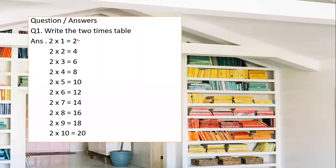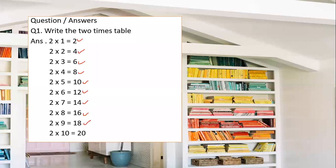Just see the order of the numbers. Two one times is two, two two times is four, three times is six, four times is eight, five times is ten, six times is twelve, seven times is fourteen, eight times is sixteen, nine times is eighteen, and ten times is twenty. You see that there is a difference of two.